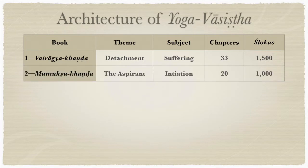Book Two, the Mumukshu Khandha, is about the aspirant — mumukshu means one who would attain moksha or enlightenment. The subject is initiation, or the beginning of sadhana. It only has 20 chapters and 1,000 shlokas, and it's the shortest book.